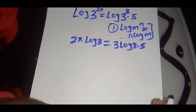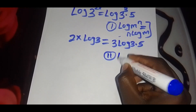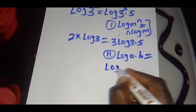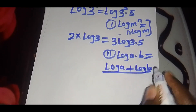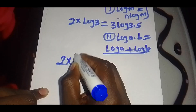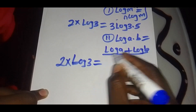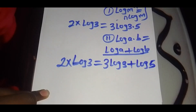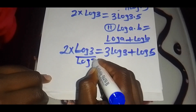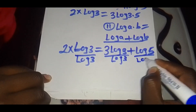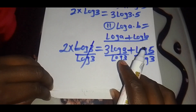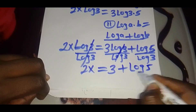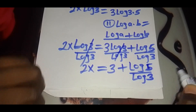We introduce the second logarithm identity, then divide both sides by log 3. Log 3 simplifies, so that you have 2x equals 3 plus log 5 divided by log 3.